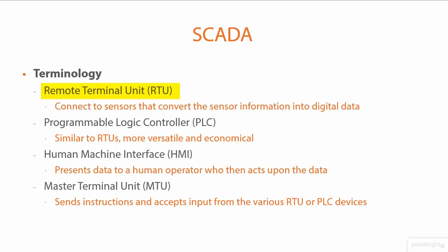We have an RTU, or Remote Terminal Unit, which connects to sensors and converts that sensor information into digital data. The sensor might be on a pipe or some piece of equipment within a larger system — checking temperature, pressure, voltage, electricity, and so forth. The RTU converts that sensor information into digital data.